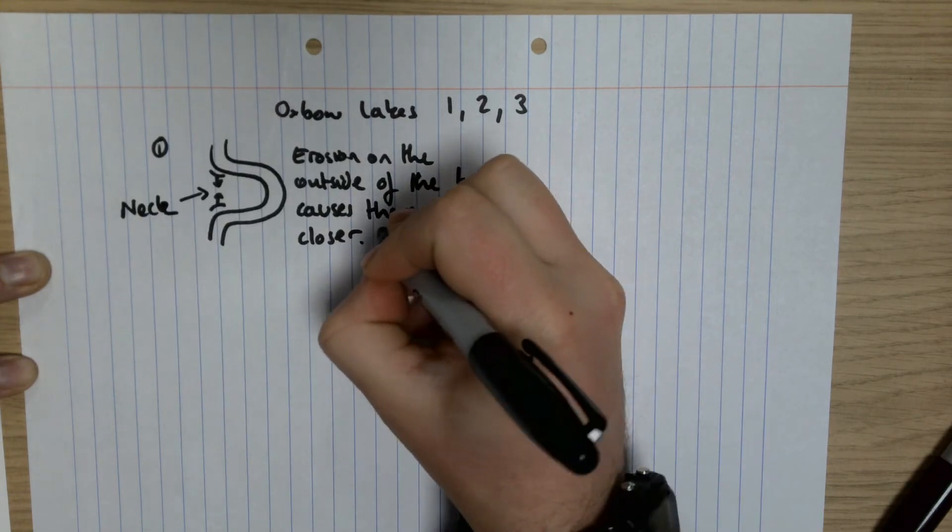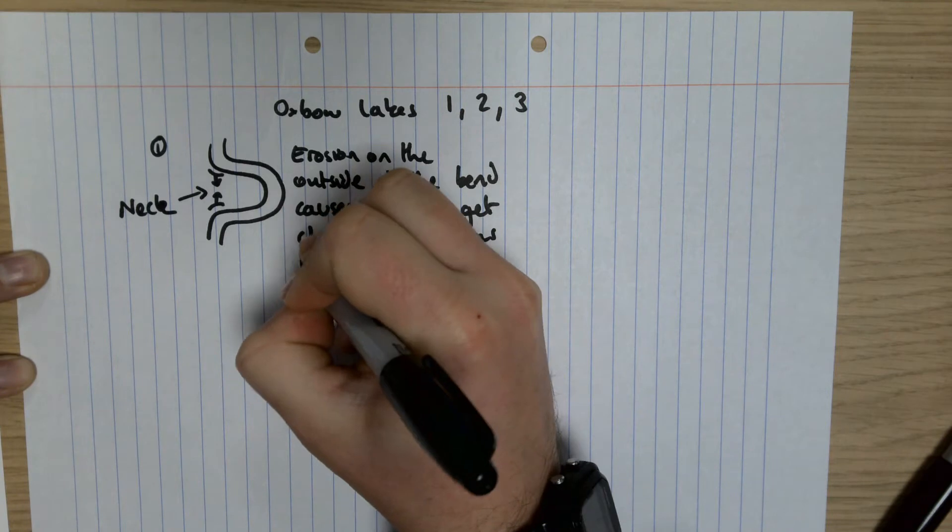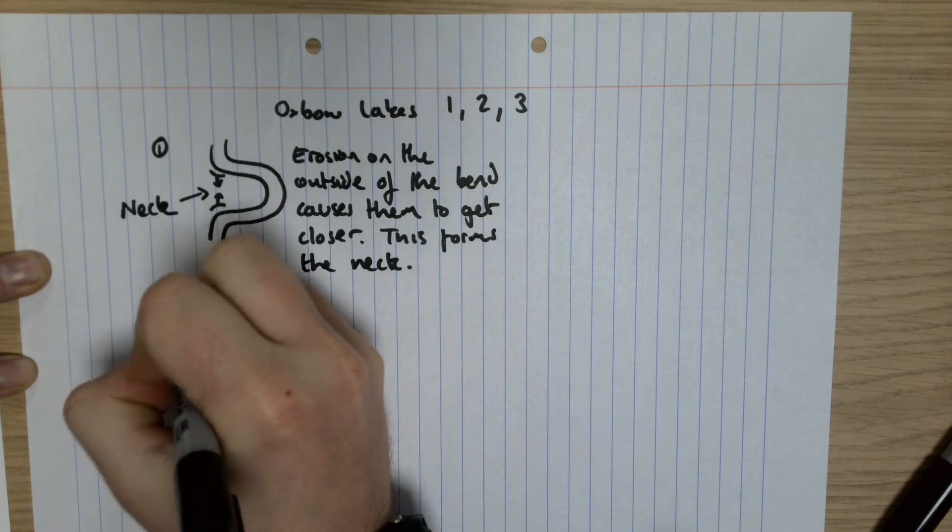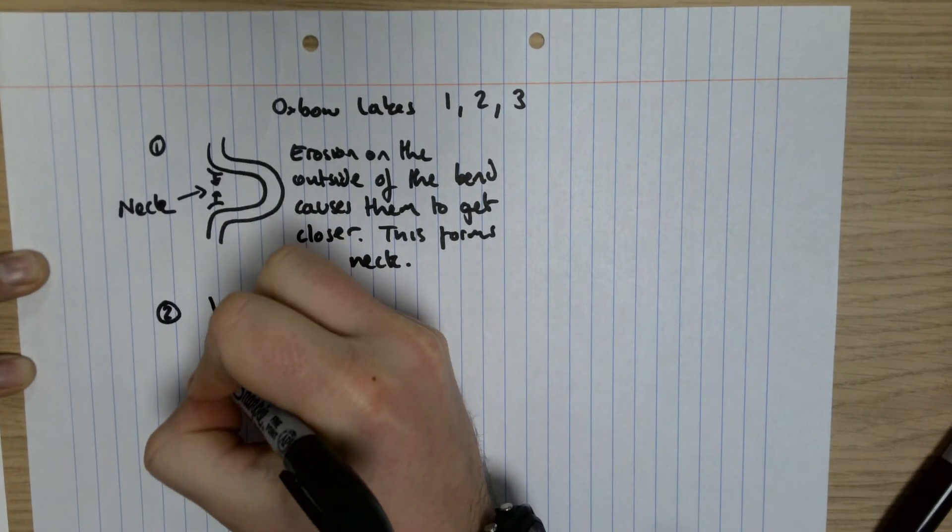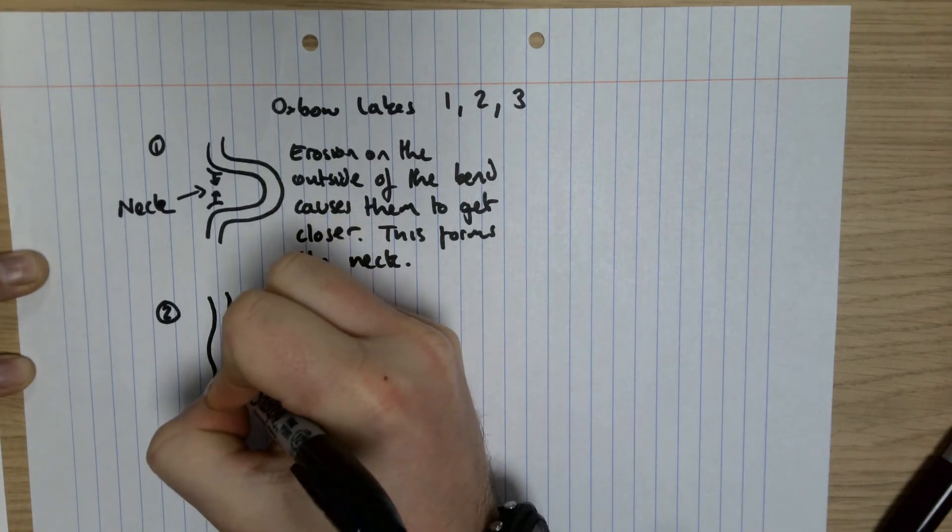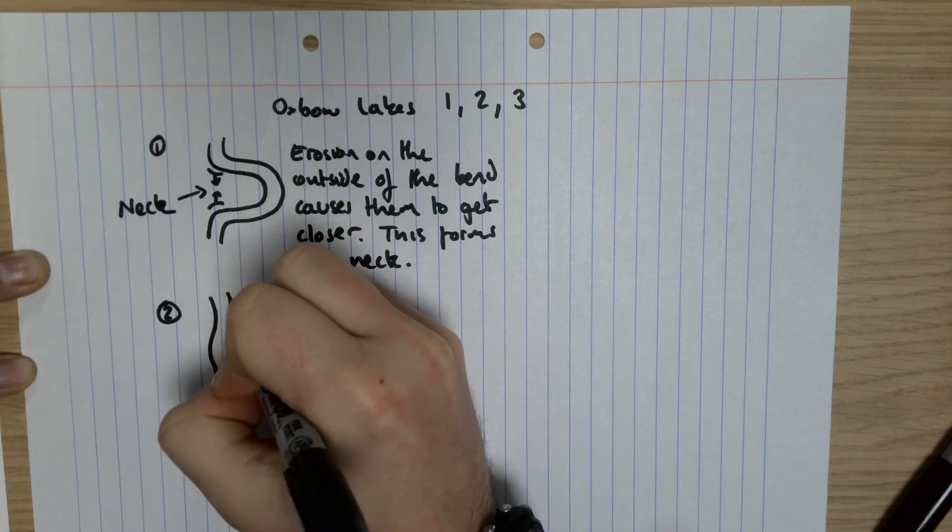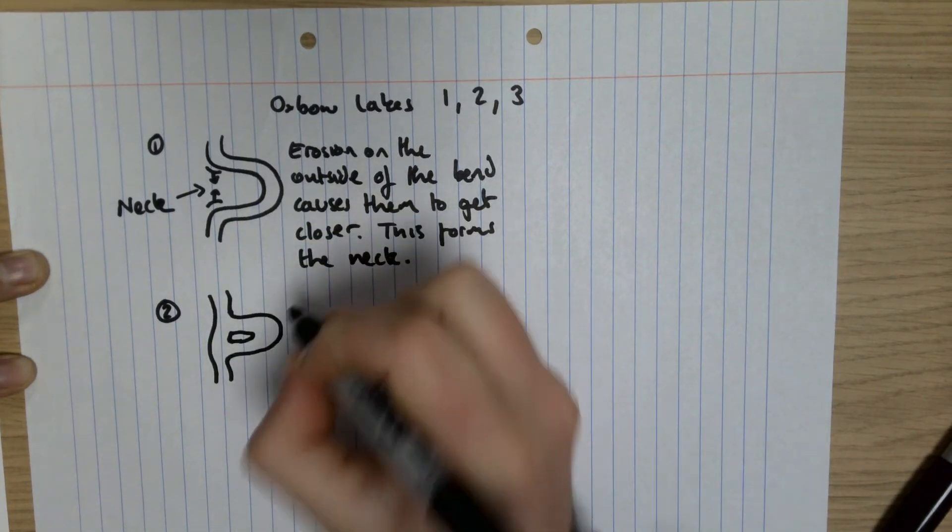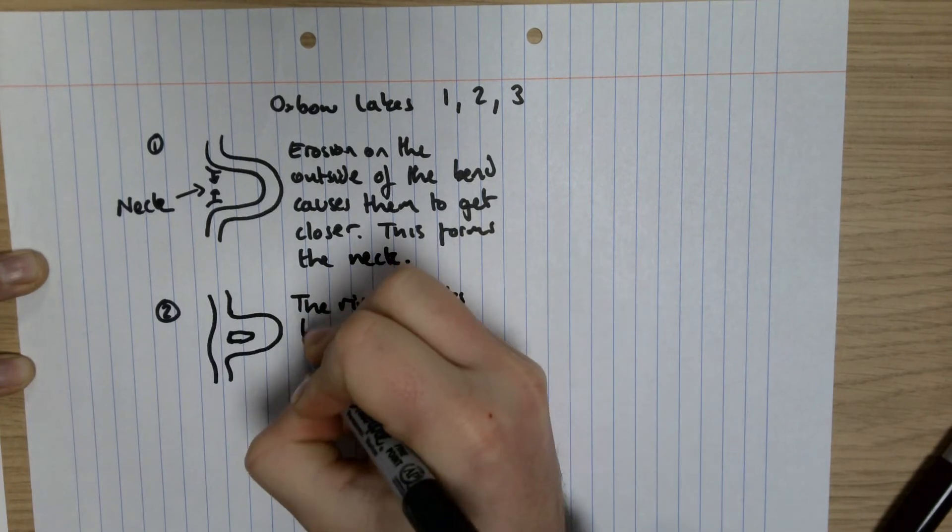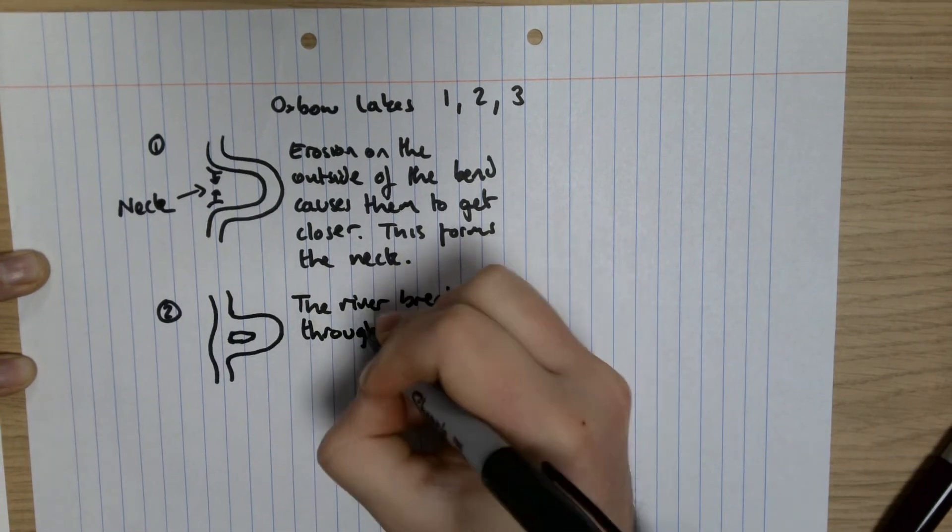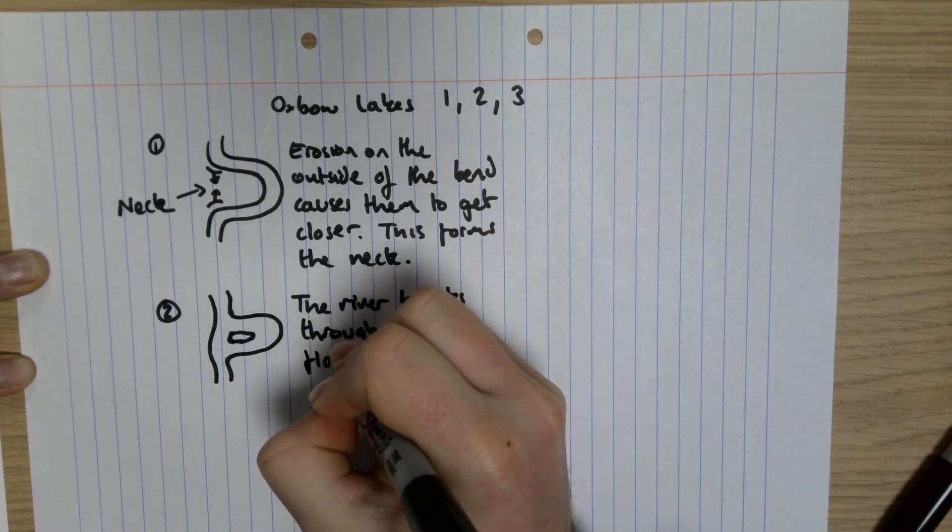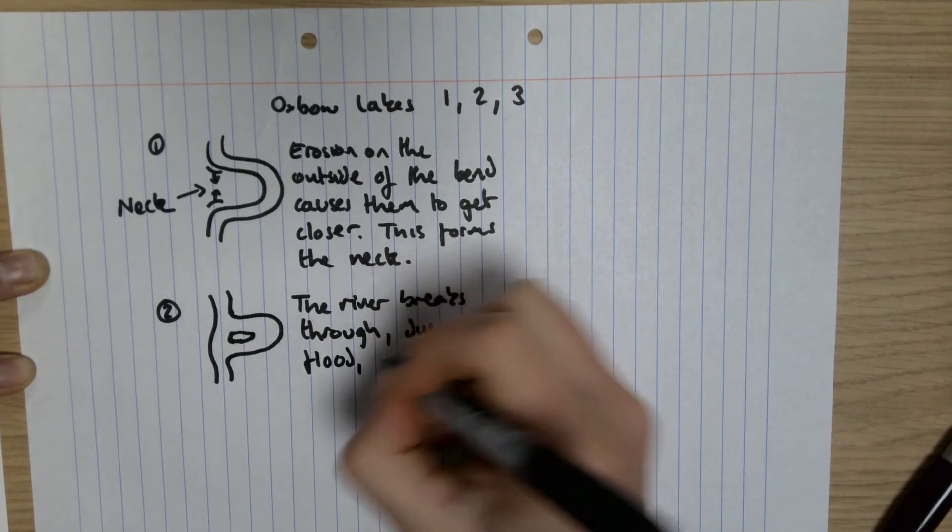Number two: eventually this breaks through and it forms this odd kind of shape like this, and there's a little bit of land here as well. So next is the river breaks through, and it often does that during the flood. And it moves along its shortest course now.